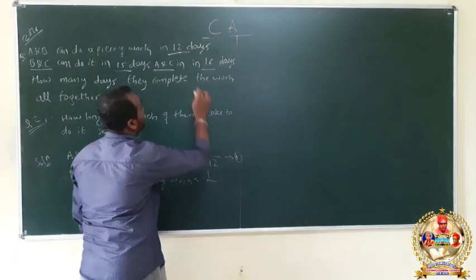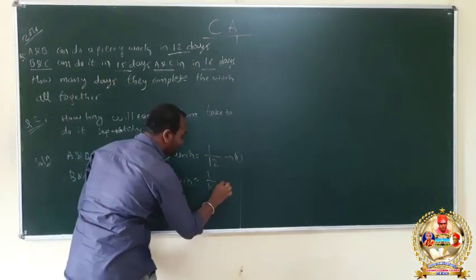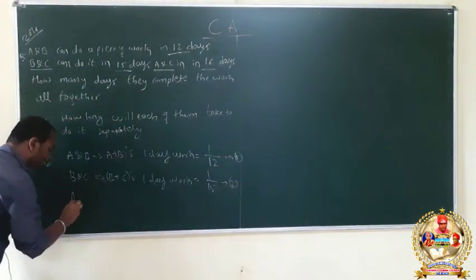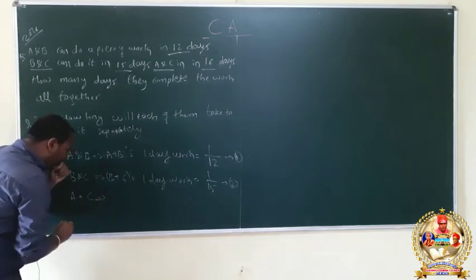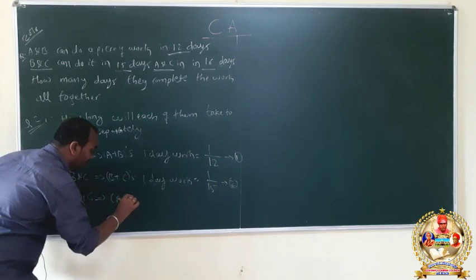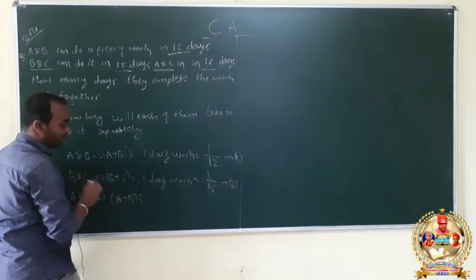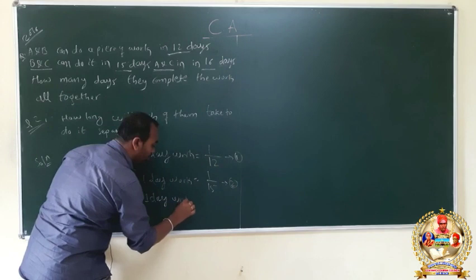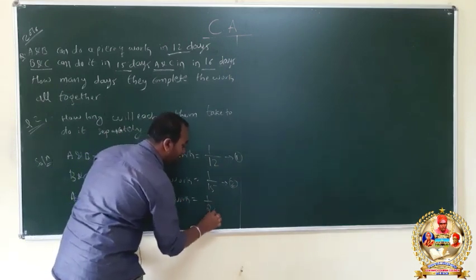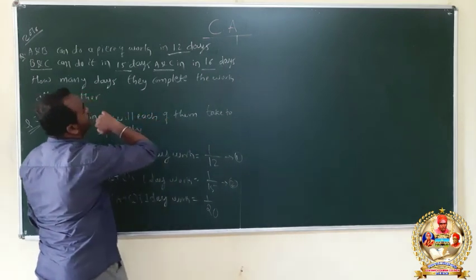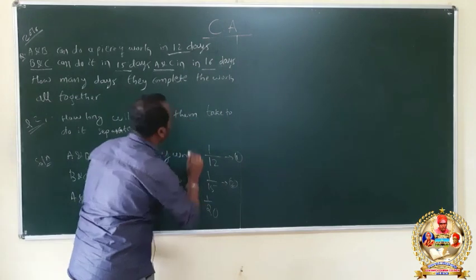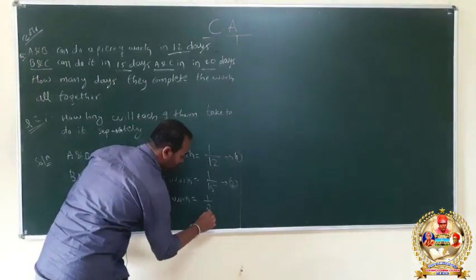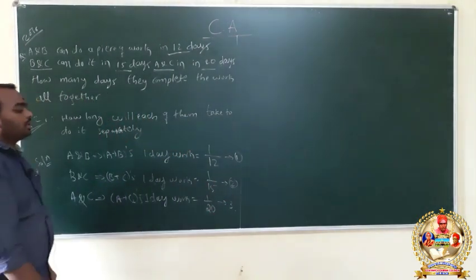Next, A and C: A plus C one-day work equals 1 by 20. This is equation 3.